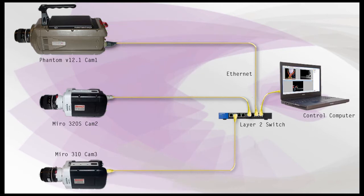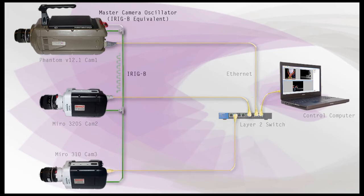As you can see in the graphic, for this scenario I have three phantom cameras networked to the control computer via an Ethernet layer 2 switch — this could be an Ethernet hub or a layer 3 switch. Since I'm using the Phantom V12-1 Cam-1 camera's internal oscillator's iRig-B generator to clock all the cameras, I'll need to connect from the iRig-Out BNC connector of the clock source camera to the iRig-In BNC connector of all three cameras, including sending it back to itself.